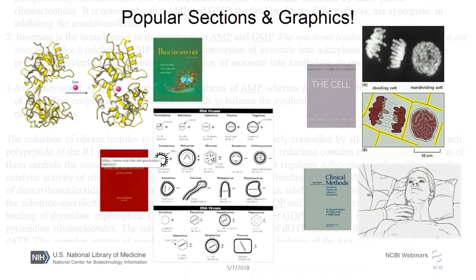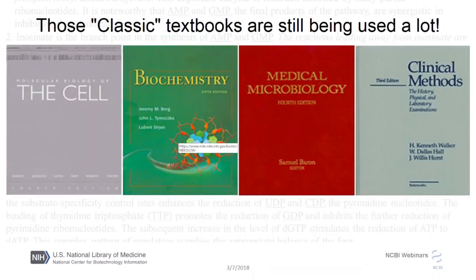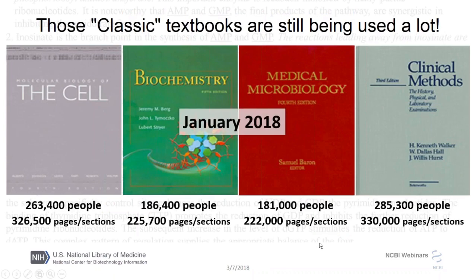The online versions of these texts include all features of the hard copy books, including graphics, images, and tables, which are some of the most heavily viewed sections. But some say these books are old — are they still useful? Are they still being used? In fact, they are. In January 2018, hundreds of thousands of people were accessing and spending time reading these textbooks. These four are currently the most popular and used entries on the NCBI Bookshelf.